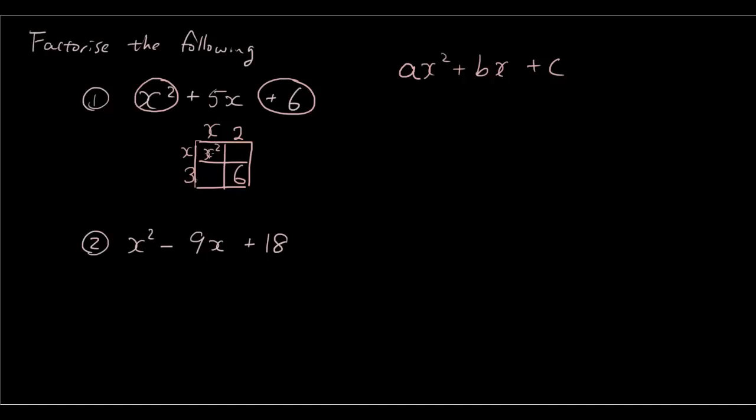So x times x is x squared, 2 times 3 is 6. And as you can guess we need to fill in these two boxes here using the product of the column and the row headings. So 2 times x is 2x, and 3 times x is 3x.